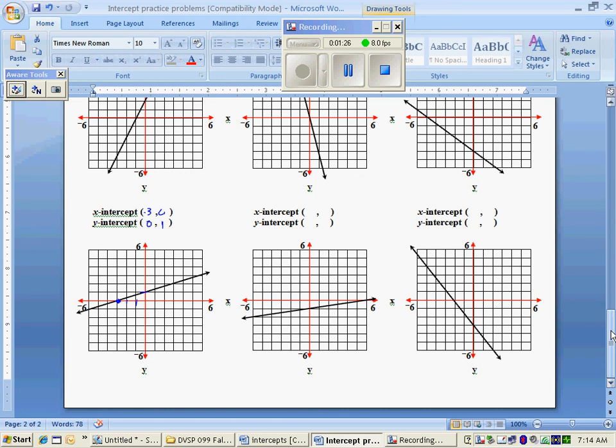Finding the x and y-intercepts. The x-intercept is 6, 0. The y-intercept is 0, negative 1.